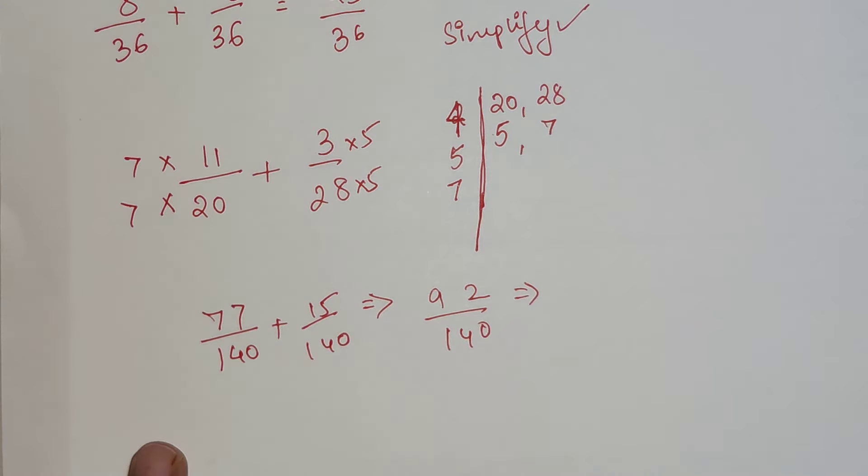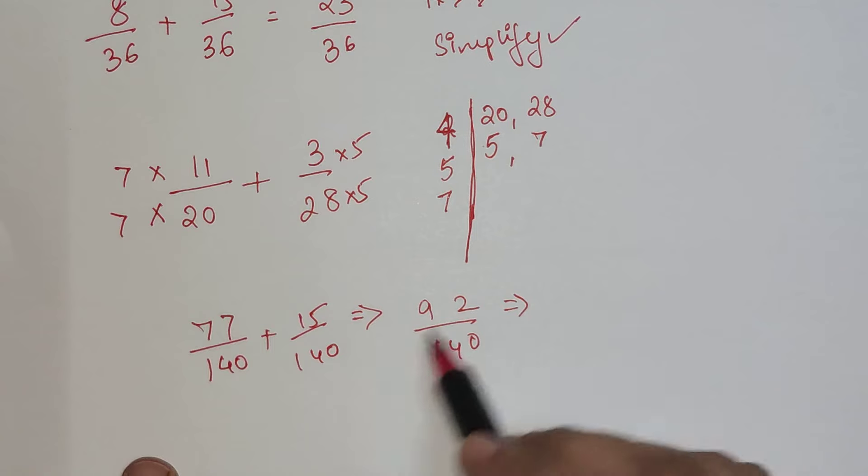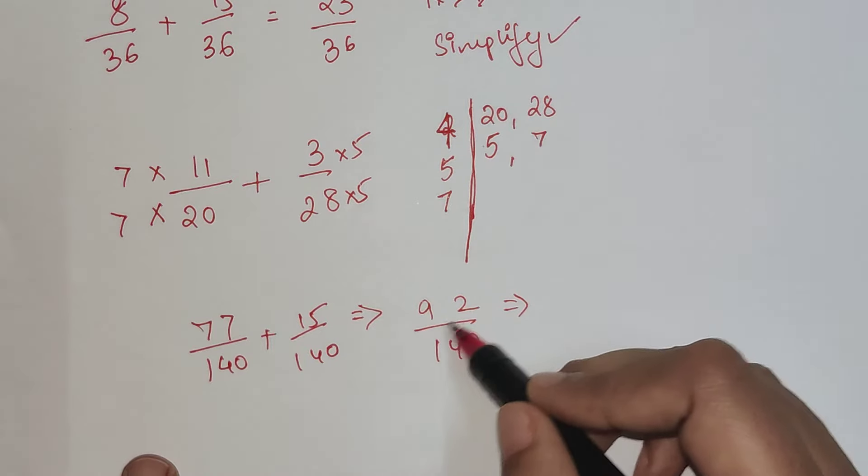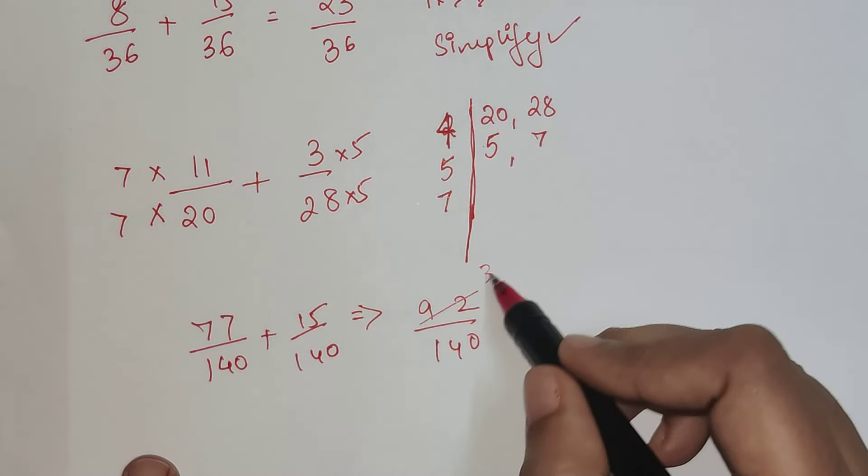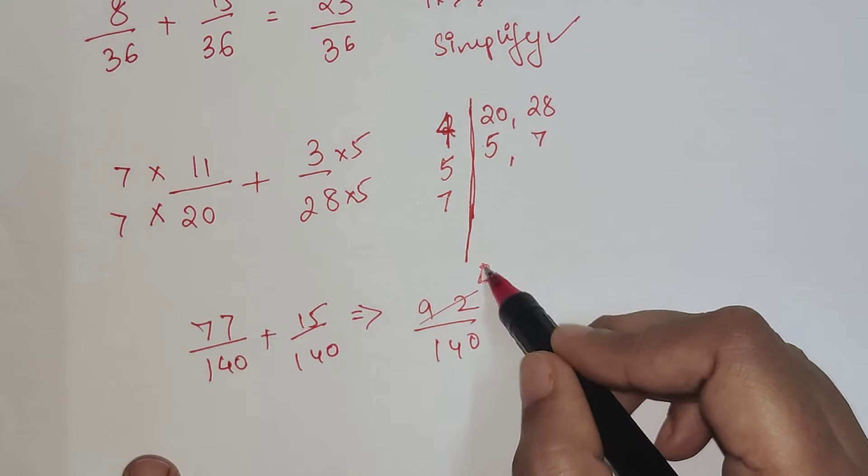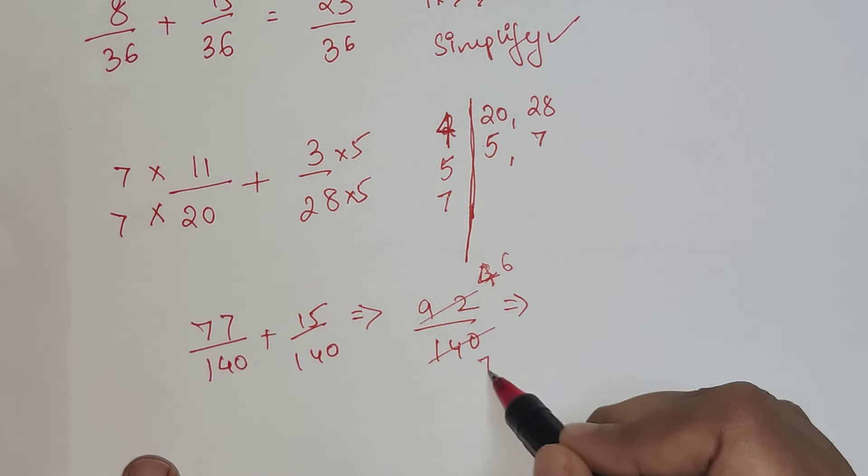This can be reduced further. If you look closely, both are divisible by 4. We can do the division or cancellation by 2 as well. So we're getting 46 and this is 70. Again both are even, so we can do this: 23 and 35.